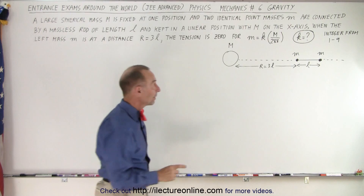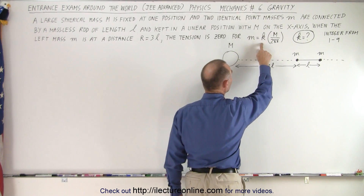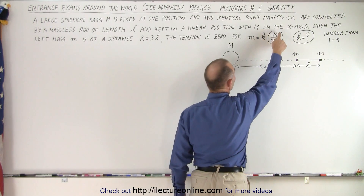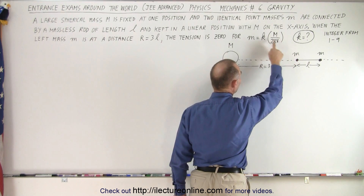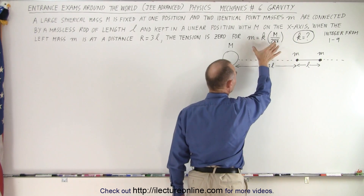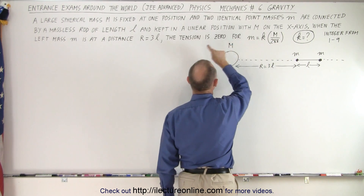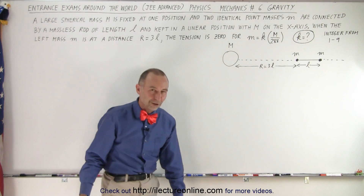If m is equal to k times large M over 288, we're trying to find the value for k such that the tension on the rod is equal to zero.